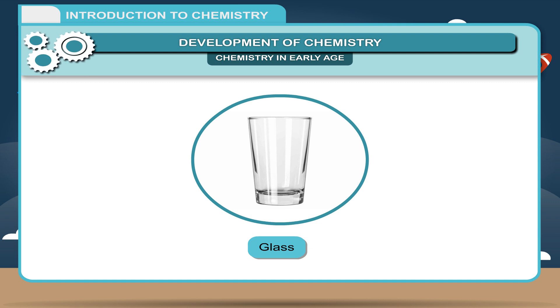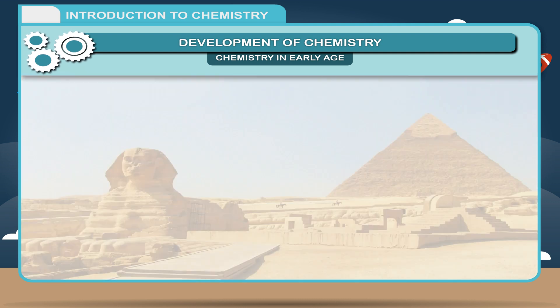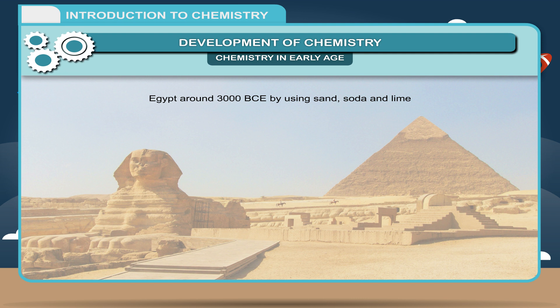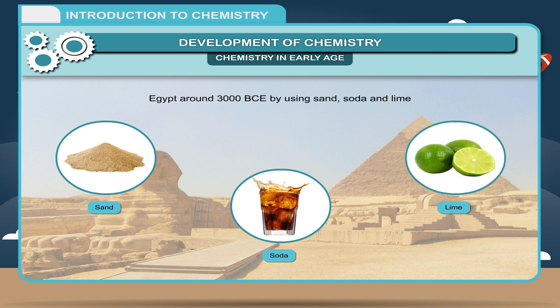Glass, which is used by us in numerous things, was first made in Egypt around 3000 BCE by using sand, soda, and lime.